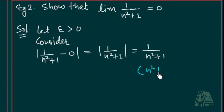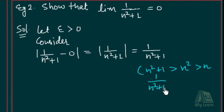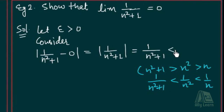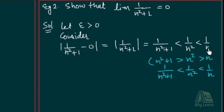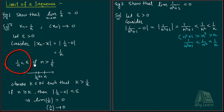Ab dekhe: n² + 1 yeh n² se bada hoga, aur n² n se bada hoga. So agar hum reciprocal le yahan par, to 1/(n² + 1) is less than 1/n², which is less than 1/n. So that means this 1/(n² + 1) is less than 1/n² which is less than 1/n. Now jaise hamne yahan par choose kiya tha, so 1/n is less than epsilon if n greater than 1/epsilon.